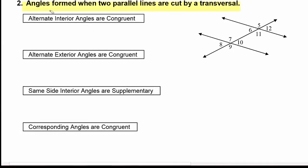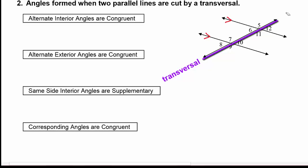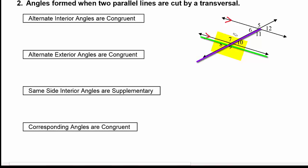Next we look at angles formed when two parallel lines are cut by a transversal. In this diagram we have a pair of parallel lines cut by a transversal, and that forms two groups of angles. The first group is formed by one of the parallel lines with the transversal — that's these four angles: 7, 8, 9, and 10.